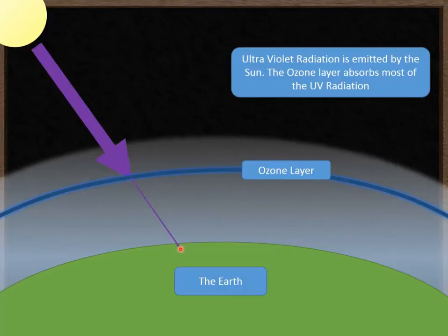So only a very small amount is able to then pass through to the earth, causing very little damage to us. Take a look at what actually happens in this part here where the UV radiation impacts the molecules of ozone.